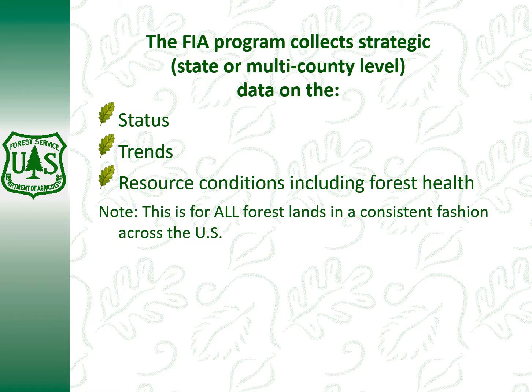Basically what the FIA program does is collect strategic state or multi-county level data on status, trends, and conditions of forests. It's looking at all land uses, but it's collecting a lot more data if it happens to be forested. Because it is a continuous forest inventory — they revisit each plot about once every six to seven years — they can actually look at trends. Each plot individually gives you the current status, and if you look at these plots over time, you can look at trends.